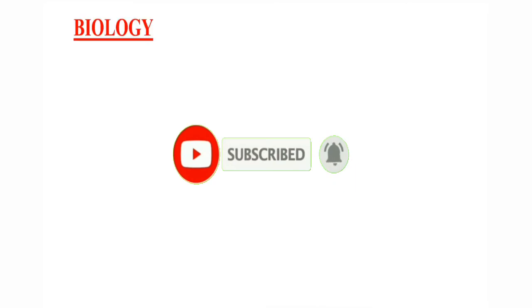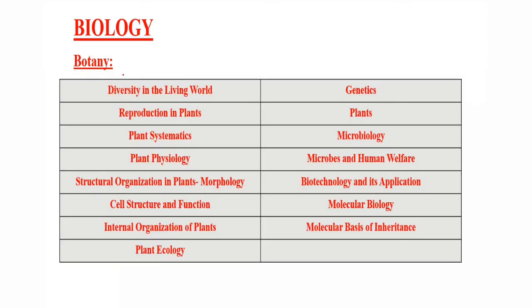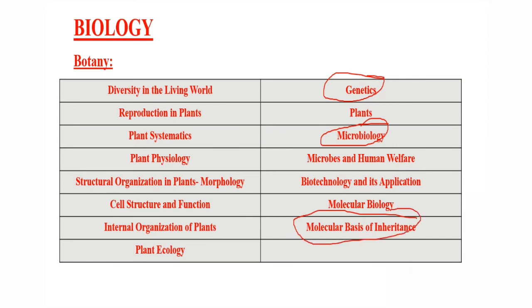Next is Biology. We divide it into Botany and Zoology. Botany topics include: diversity and the living world, reproduction in plants, plant systematics, plant physiology, structural organization in plants, morphology, cell structures and functions, internal organization of plants, plant ecology, genetics, microbiology, human welfare, biotechnology and its applications, molecular biology, and molecular basis of inheritance. Important major chapters include genetics, microbiology, molecular inheritance, applications of biotechnology, and reproduction in plants.